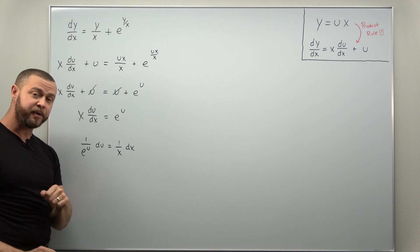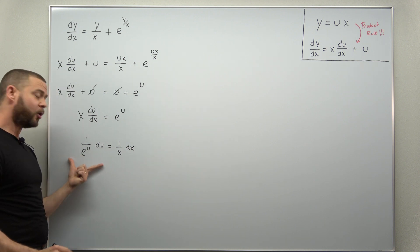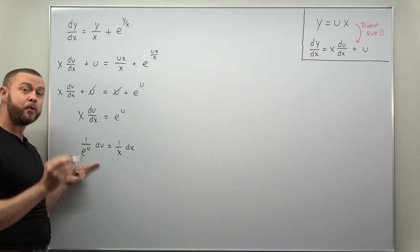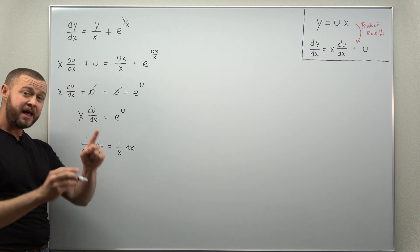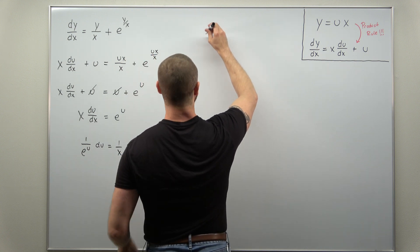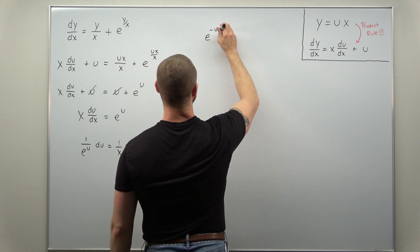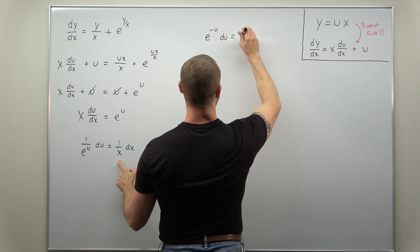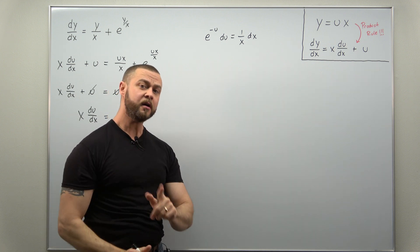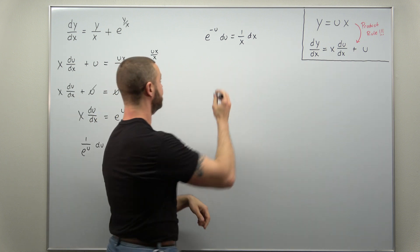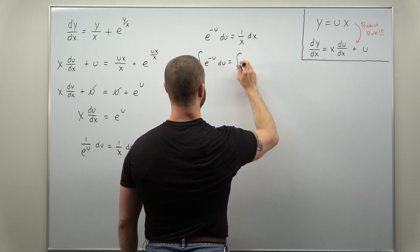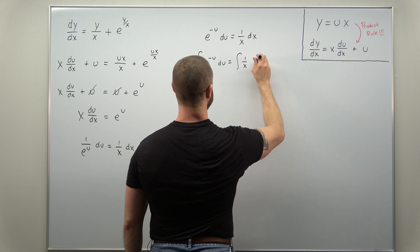From here we can integrate both sides, but don't be afraid to rewrite your terms to make the integration a little bit easier. We're going to rewrite 1 over e to the u as e to the negative u. So we rewrite that as e to the negative u du equals 1 over x dx. Now we can integrate both sides — the left side with respect to u and the right side with respect to x.